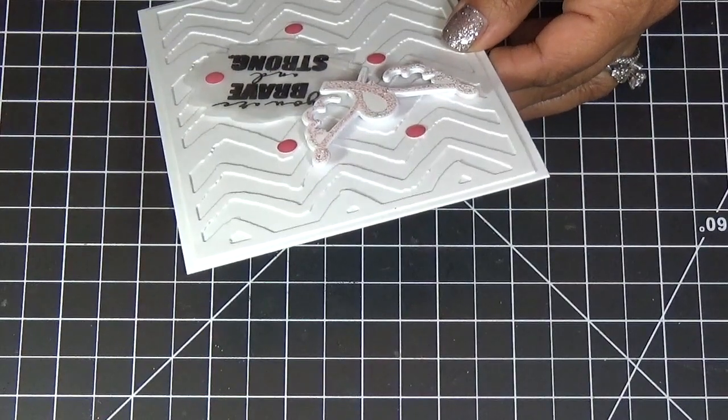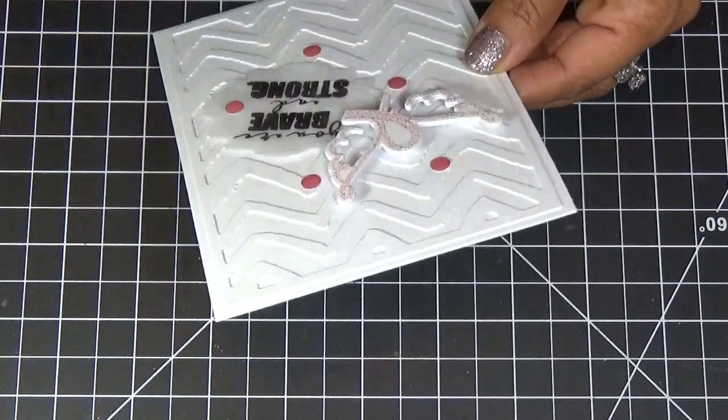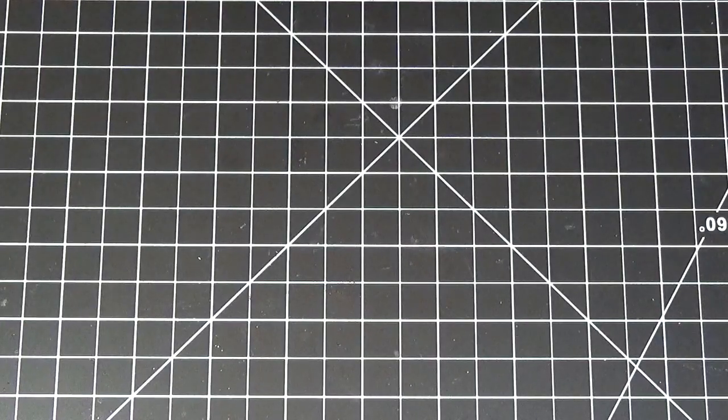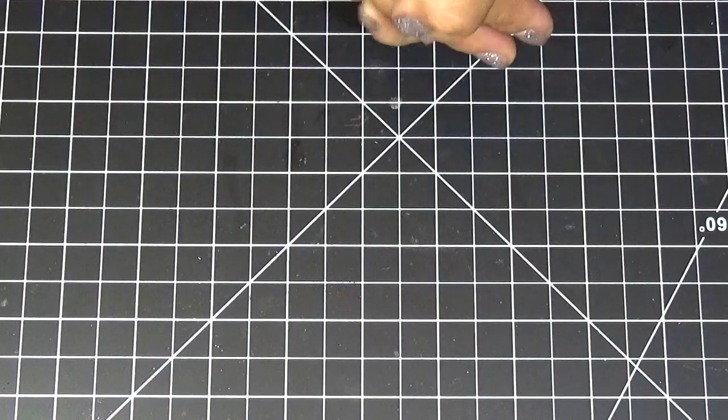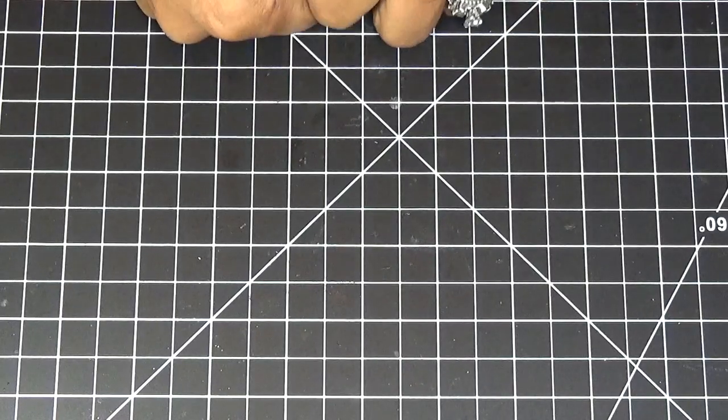So don't forget to leave all of your comments for a chance to win this brand new stamp and die set. Again it has nine stamps along with two coordinating dies. Okay so that is it for today everybody, I hope you enjoyed our first day of our Sneaky Peaks.